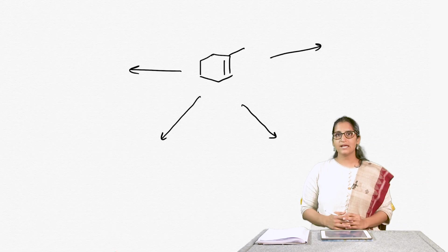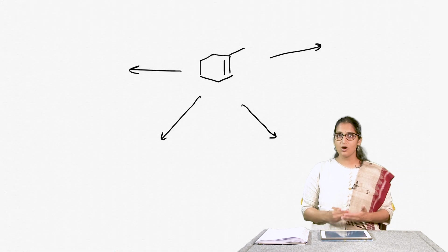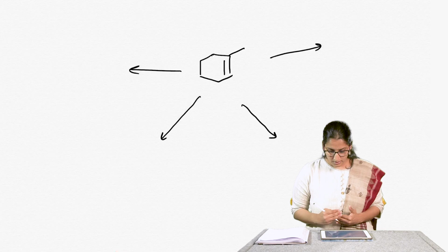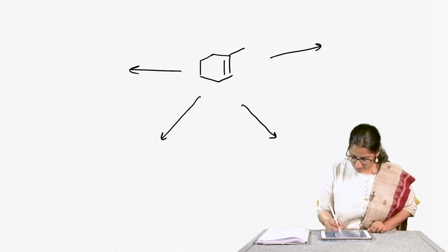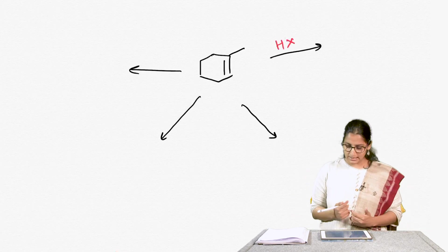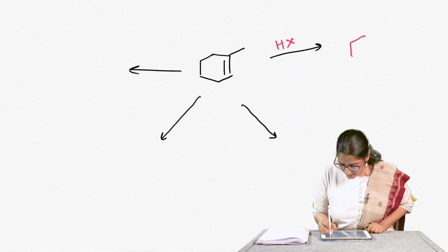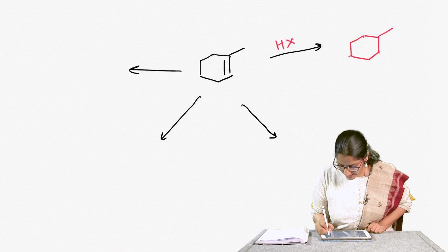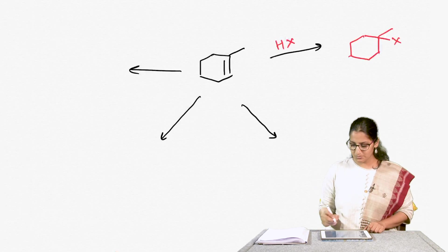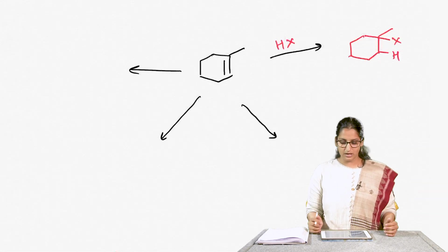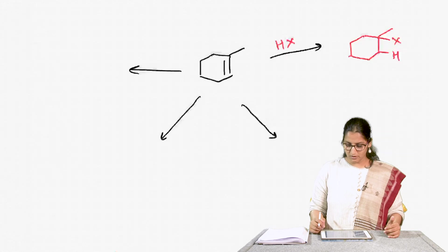So far, we have seen many reactions of alkenes. Before we go ahead with today's talk, I am going to summarize them. The first reaction we saw was reaction with HBr or HCl — written as HX — where the bromide or chloride adds on the more substituted carbon and the hydrogen adds on the less substituted carbon. This is Markovnikov's rule.